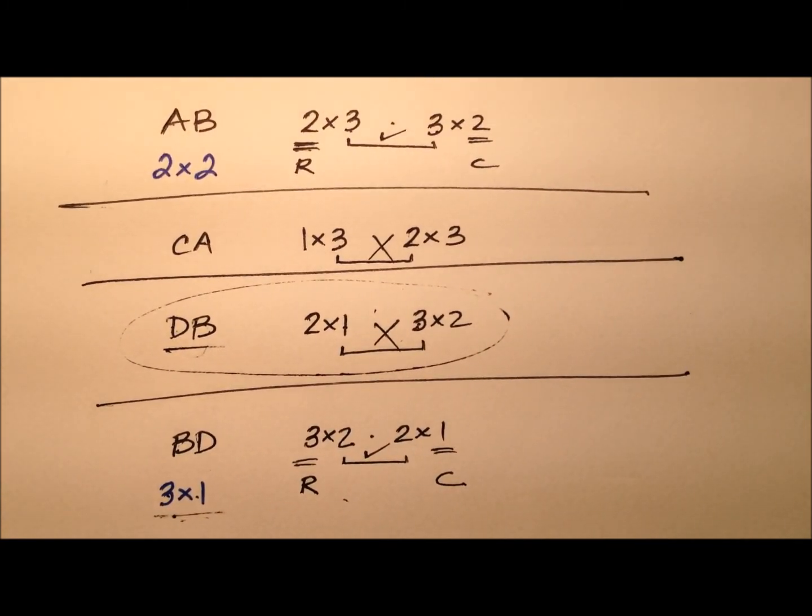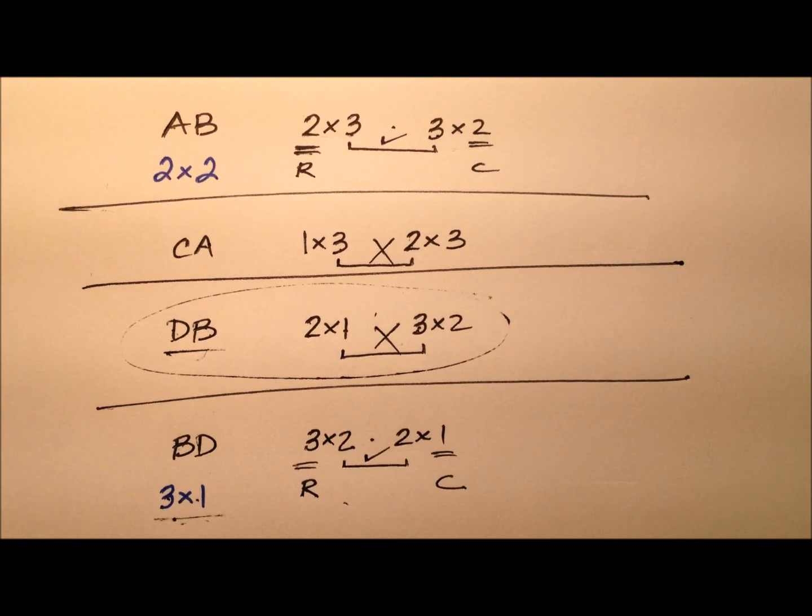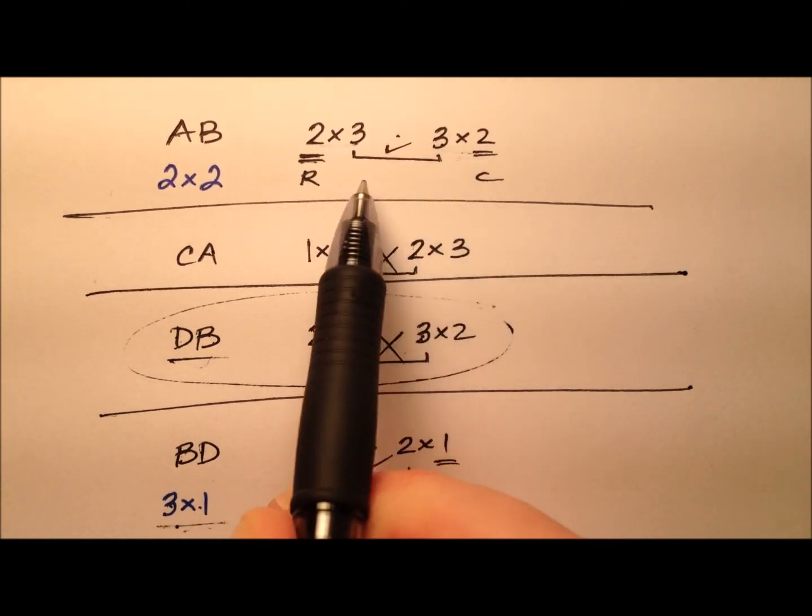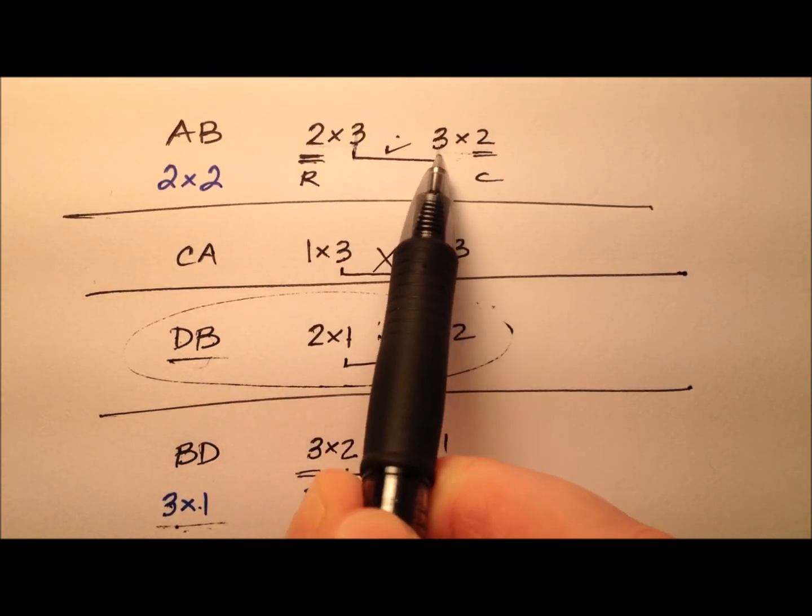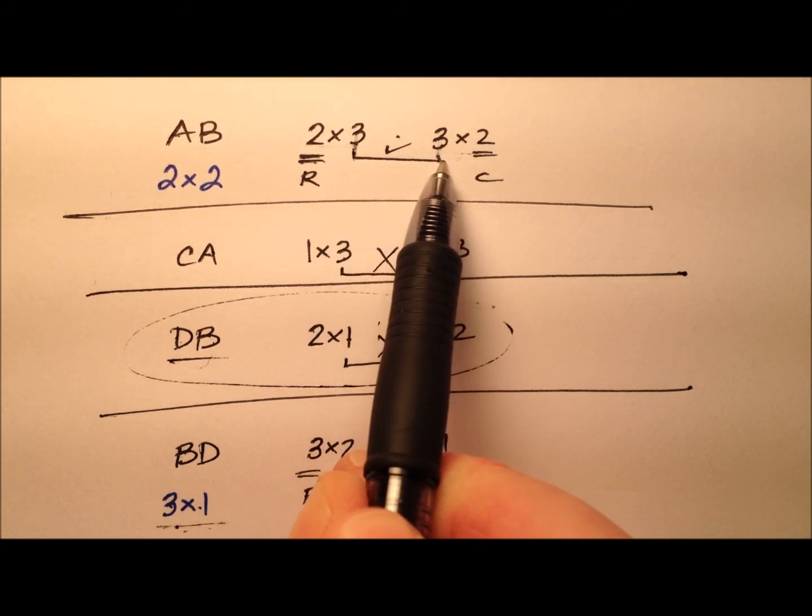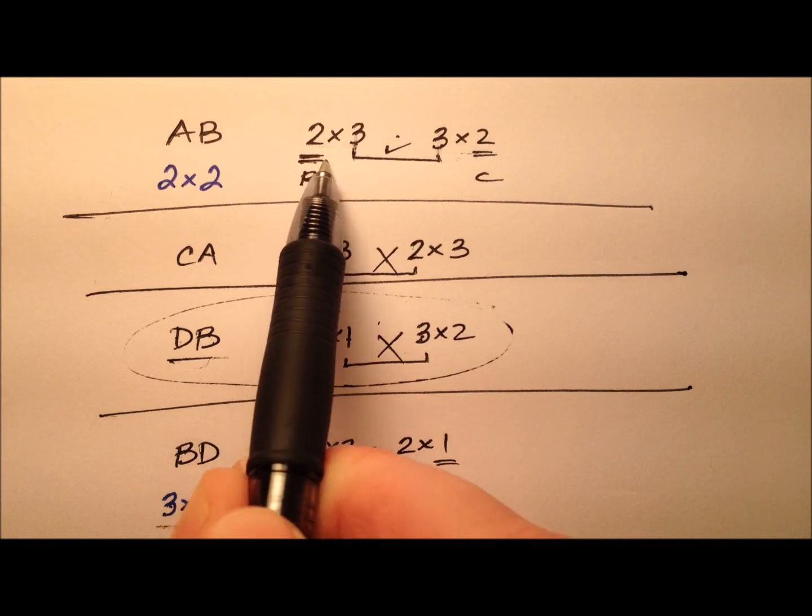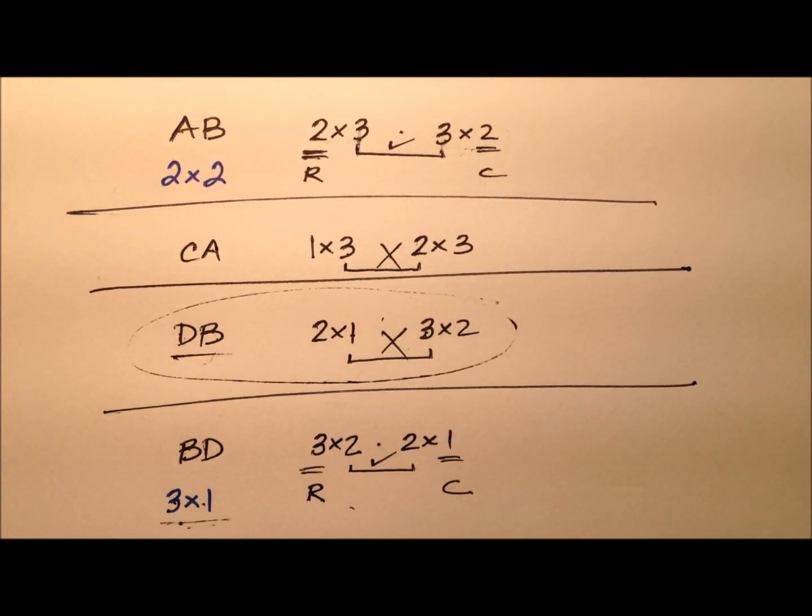So when you're trying to figure out the dimensions of the product matrix, go ahead and put the dimensions of each of the matrices that you're multiplying together next to each other. And as long as the number of columns here in the first one is equal to the number of rows here in the second one, then you can go ahead and do this multiplication. And the dimensions for that product matrix will be the rows of the first one and the columns of the second one.